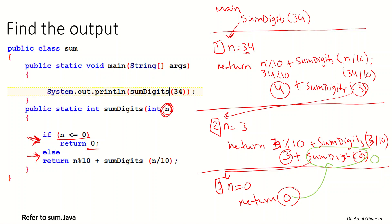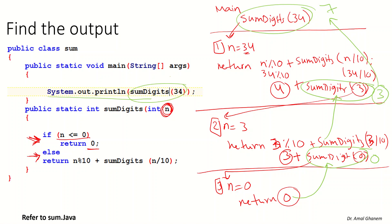So 3 plus 0 gives us 3, and we take that back to the previous call. Then 4 plus 3 is 7. So we go to the main and the result of the calling is 7. Once we go to the main, we output the value of the method, so the output is 7.